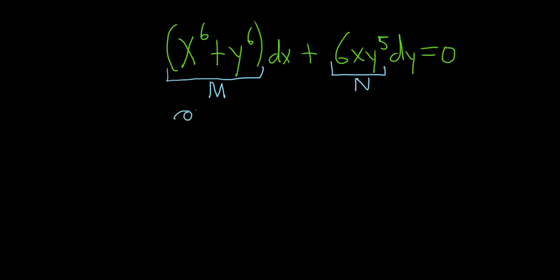you first compute del M del Y. And the way I'm able to memorize that is I just remember it's the other variable. There's an X here, so you put a Y here. When you're computing del M del Y, you treat all of the other variables as constants.